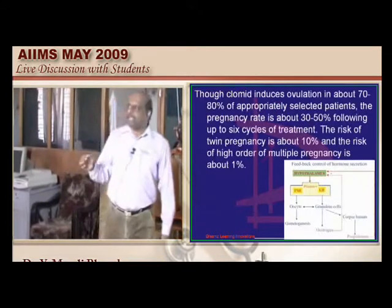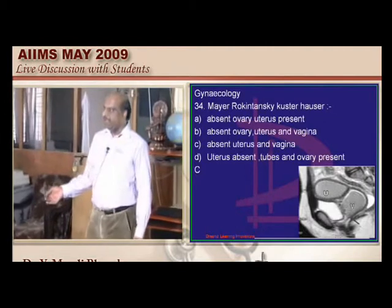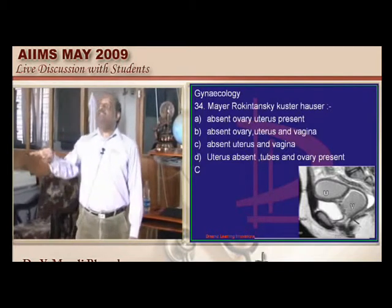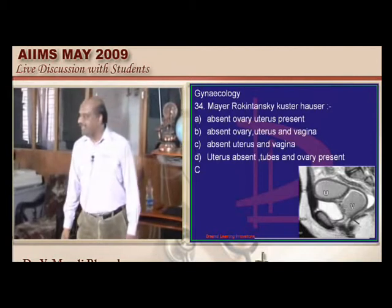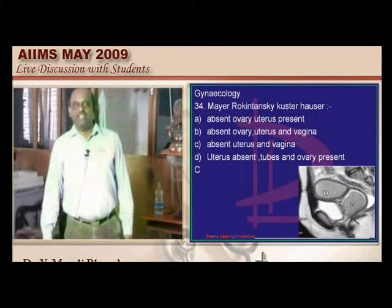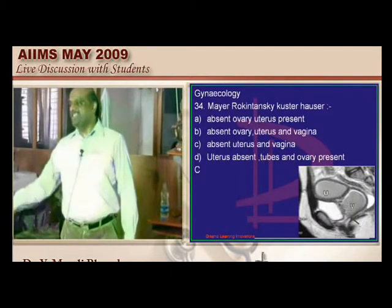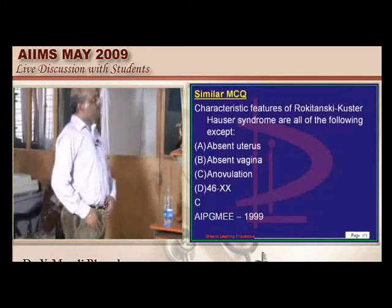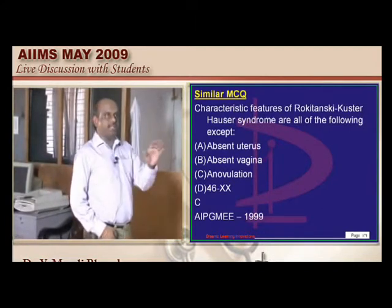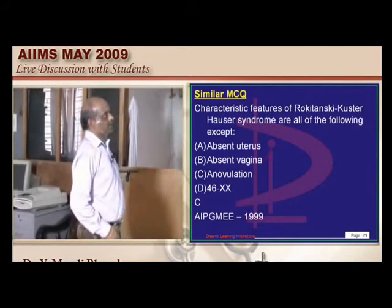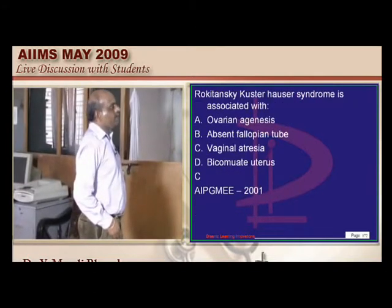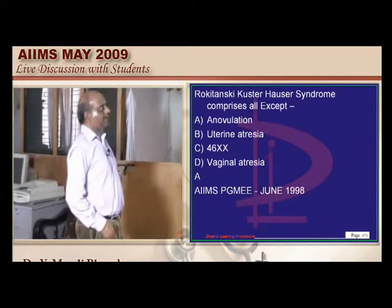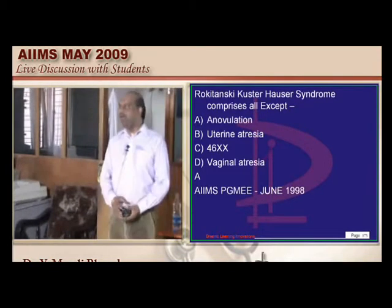Mayer-Rokitansky-Küster-Hauser syndrome is a traditional question. Testicular feminization syndrome is also a most sought-after area. There is a question on Müllerian agenesis — absent uterus and vagina with normal ovulation and ovaries in Rokitansky-Küster-Hauser. All India 2001 confirmed vaginal atresia in this syndrome. A similar question appeared in June 98.